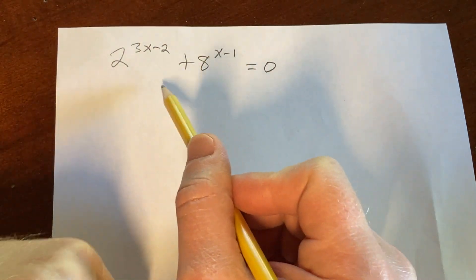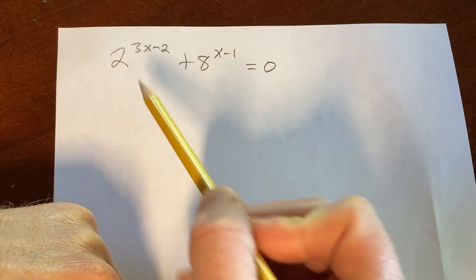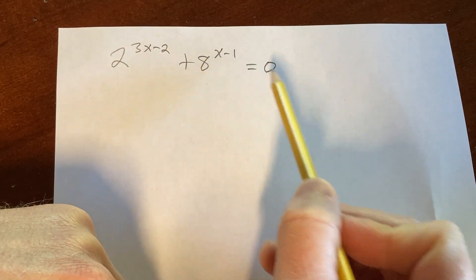Hi, in this video we're going to solve this exponential equation. We have 2 to the 3x minus 2 plus 8 to the x minus 1 equals 0.